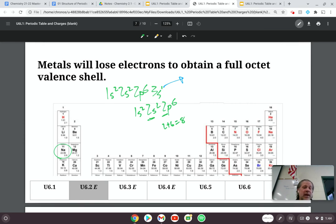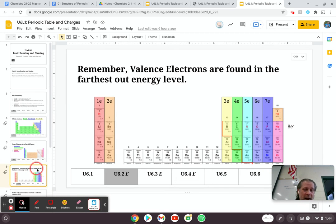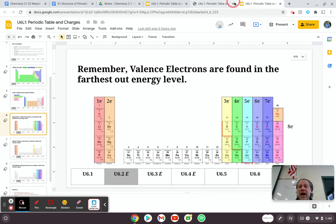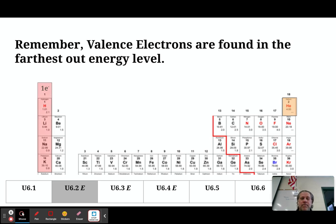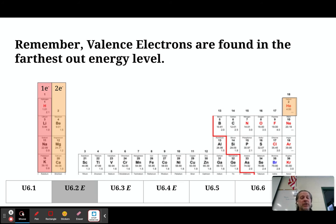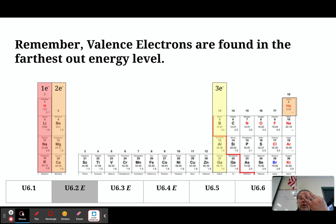When sodium loses an electron to obtain a full octet, it forms an ion that is positively charged — a cation. Because it lost one electron, it becomes a sodium ion with a plus one charge. Everything in the first column has one valence electron and will lose it to become +1 charged. Everything in the second column has two valence electrons and will lose both to become +2. Elements in the third column have three valence electrons and lose them to become +3.